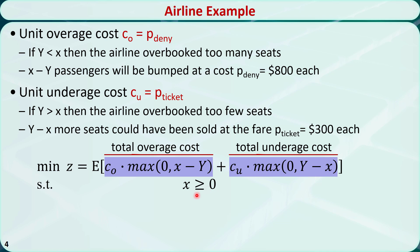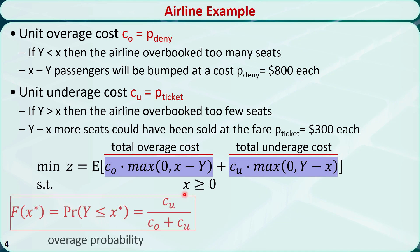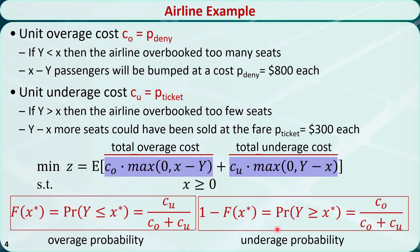In a previous video about the news vendor model, we found that the optimal quantity X* is determined so that the overage probability equals the ratio of the unit underage cost over the sum of the unit overage and underage costs. Also, the underage probability equals the ratio of the unit overage cost over the sum of the unit overage and underage costs.